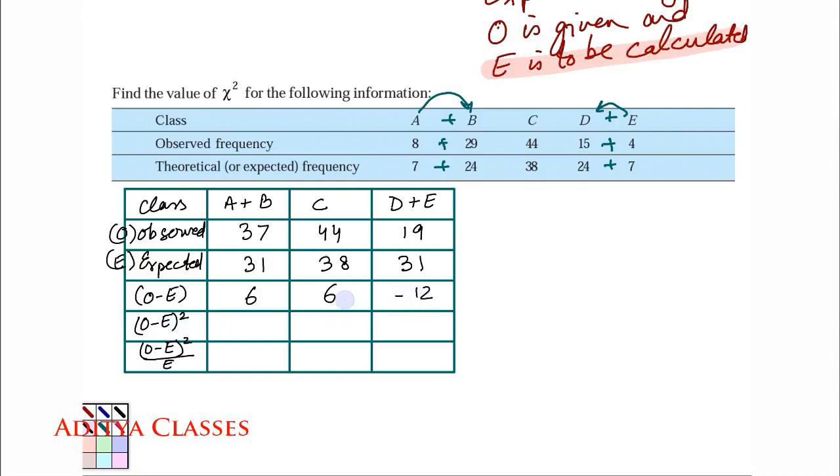Now I need squares of these. No issues. O minus E square. So 6 square will be 36. 6 square will be again 36. And minus 12 square will give me 144.